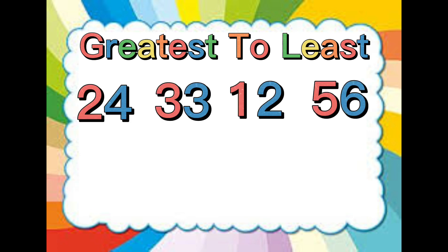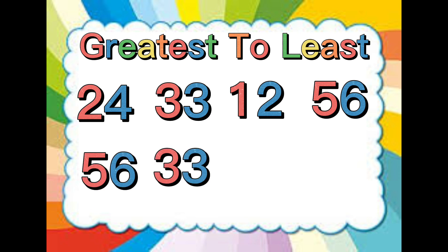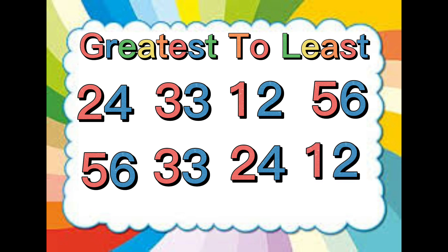Let's arrange these numbers from greatest to least. The greatest number is 56. The next greatest to 56 is 33. The next greatest to 33 is 24. The least number in this set is 12.